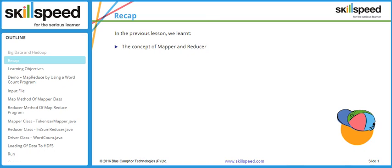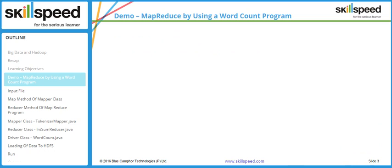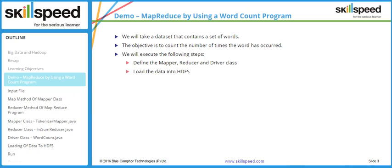In the previous lesson we learned the concept of mapper and reducer in depth. In this lesson we'll explain the MapReduce job operation using a practical code example — the word count program. The steps involved are: define the mapper, reducer, and driver class; load input data into HDFS; execute the jar file; and check the output.